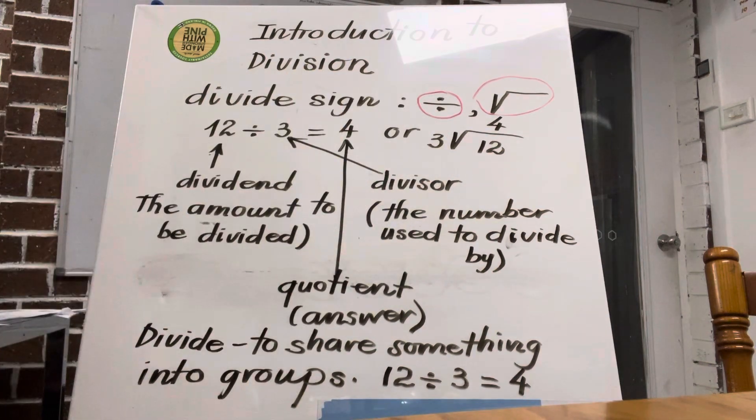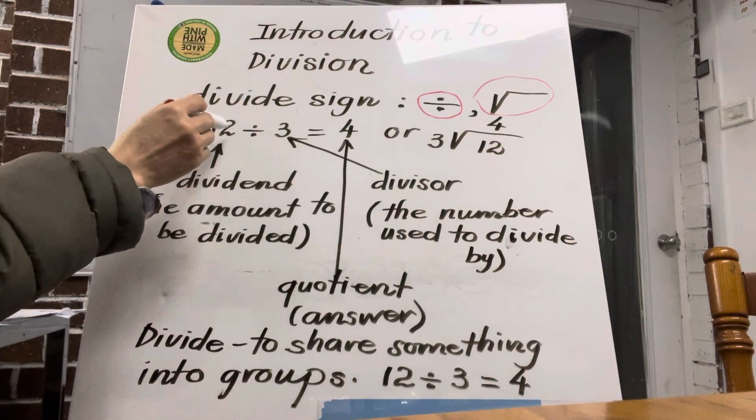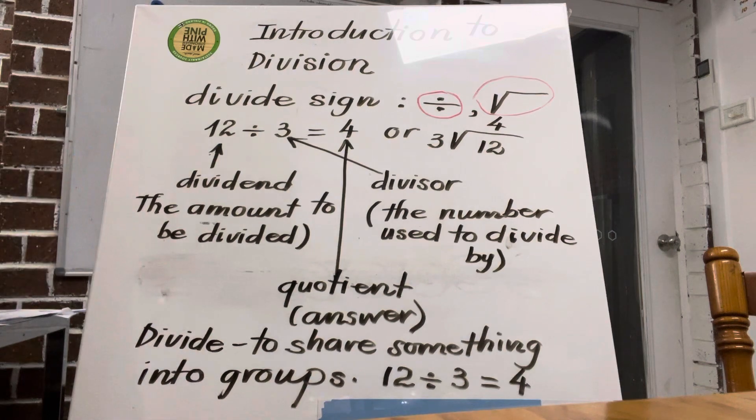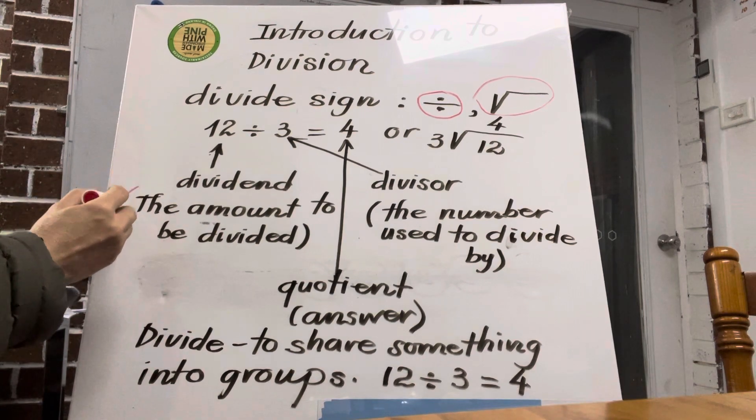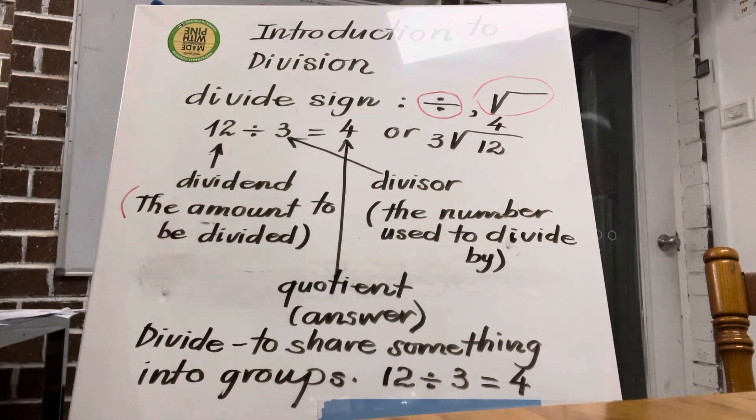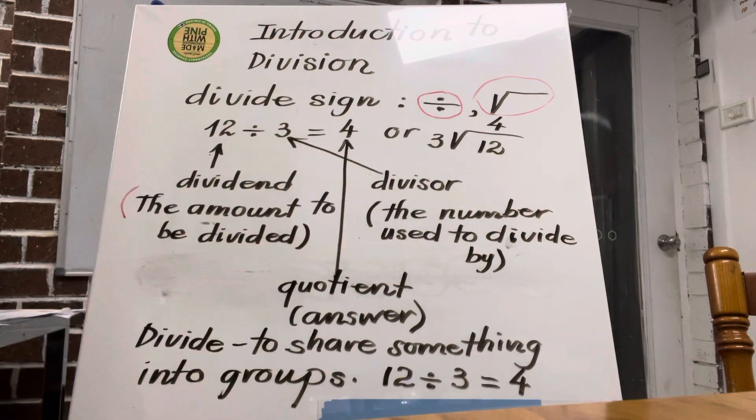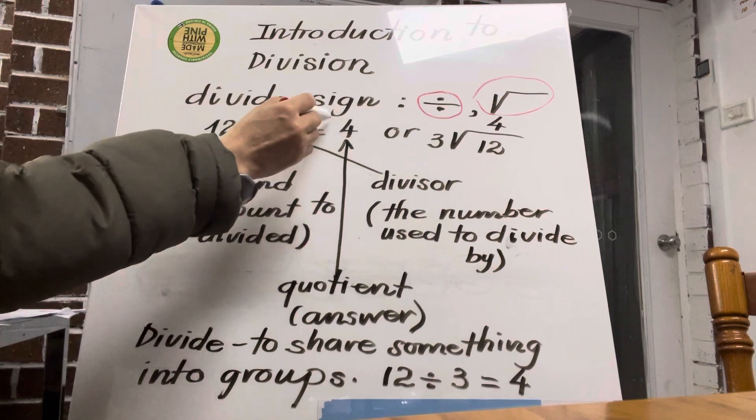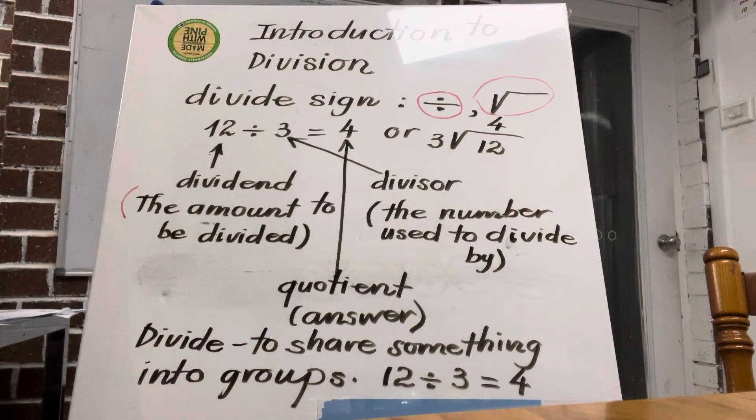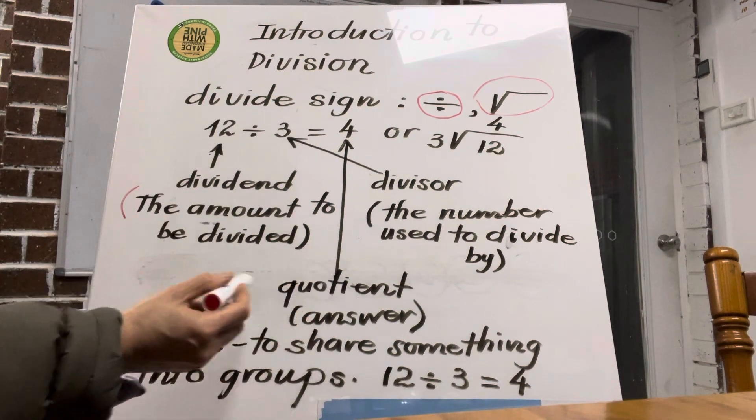So the biggest number, what do we say? Dividend. So what does it mean? Dividend: the amount to be divided. And number three here, what do we call? Divisor. So what is divisor? The number used to divide by. And this is the answer, so in division we call it quotient. Quotient means the answer.